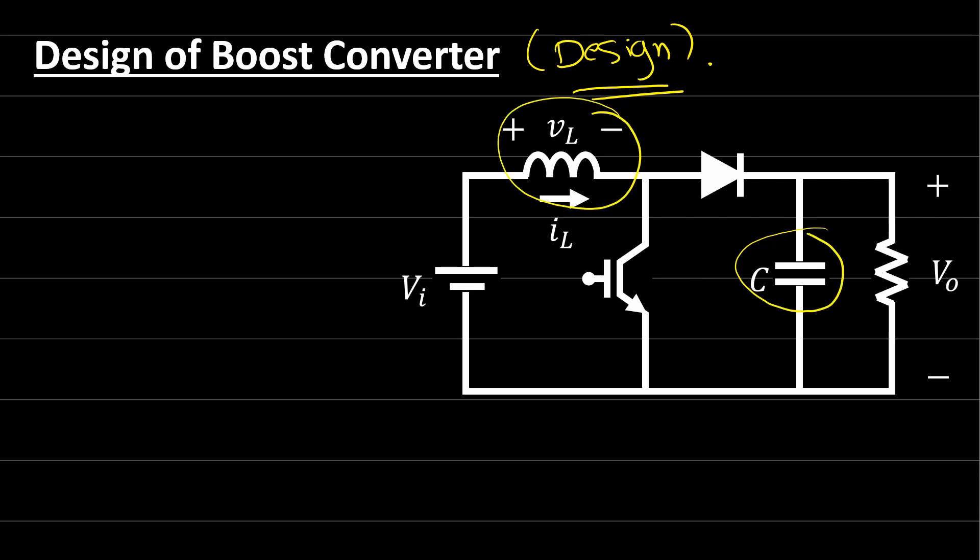We know that if we increase the value of the inductor, the ripple inside the inductor current will be decreased. Similarly, if we increase the capacitor value, the ripple on the output will be decreased. But now we need to understand how much the value of the capacitor and the inductor should be.